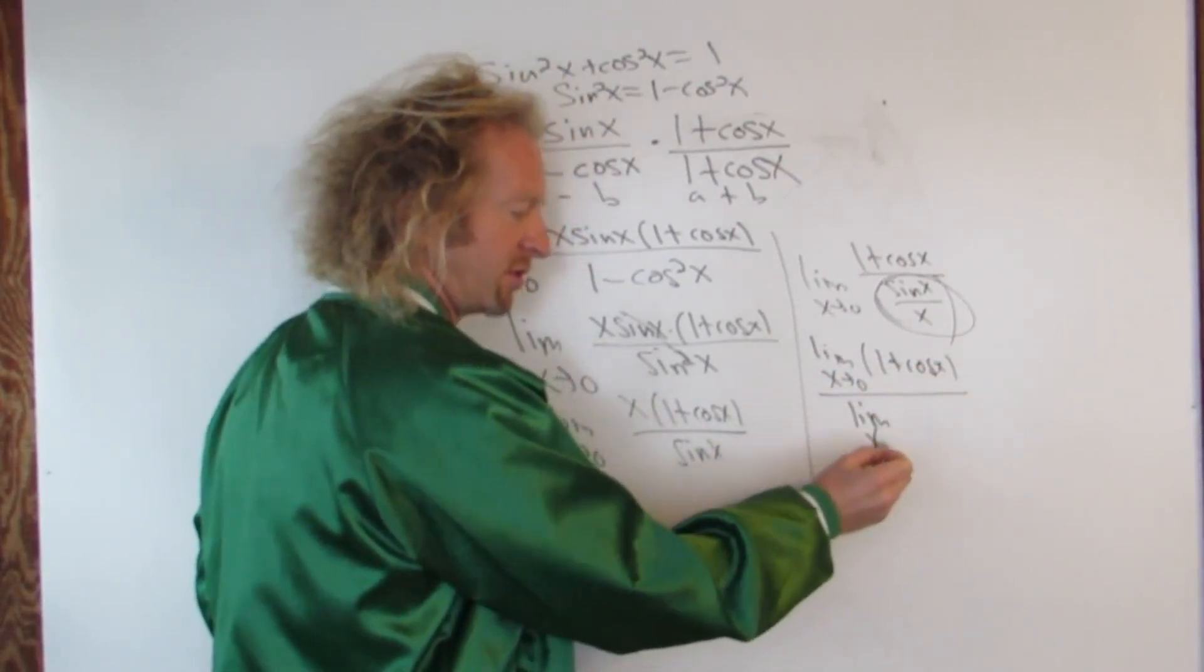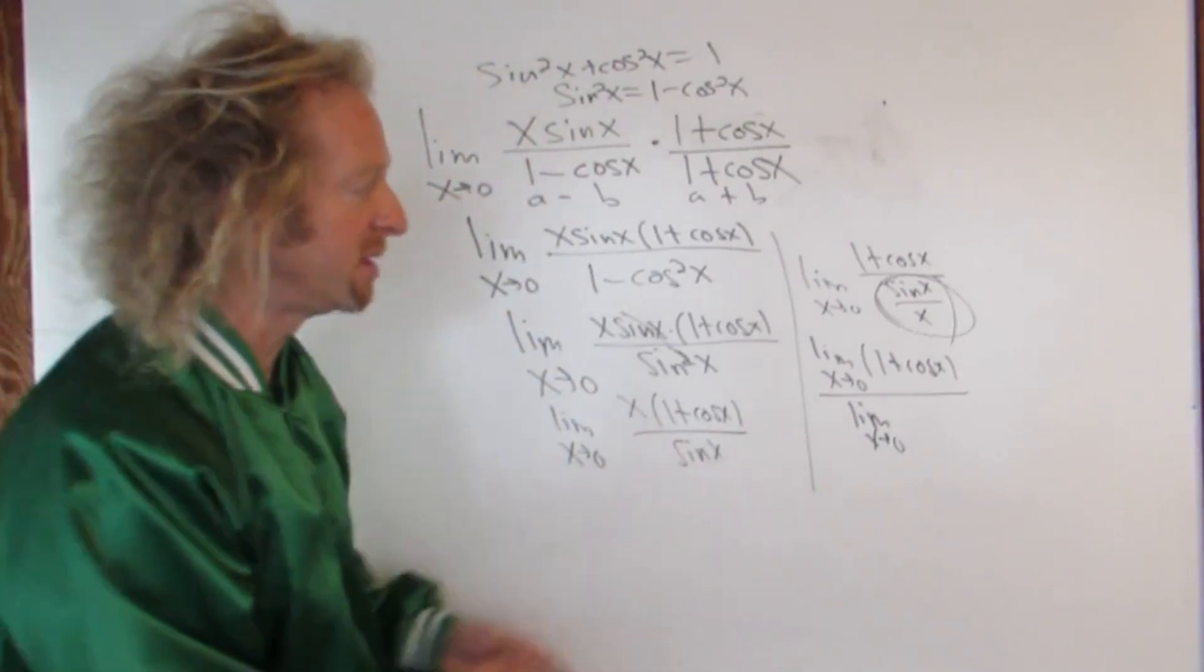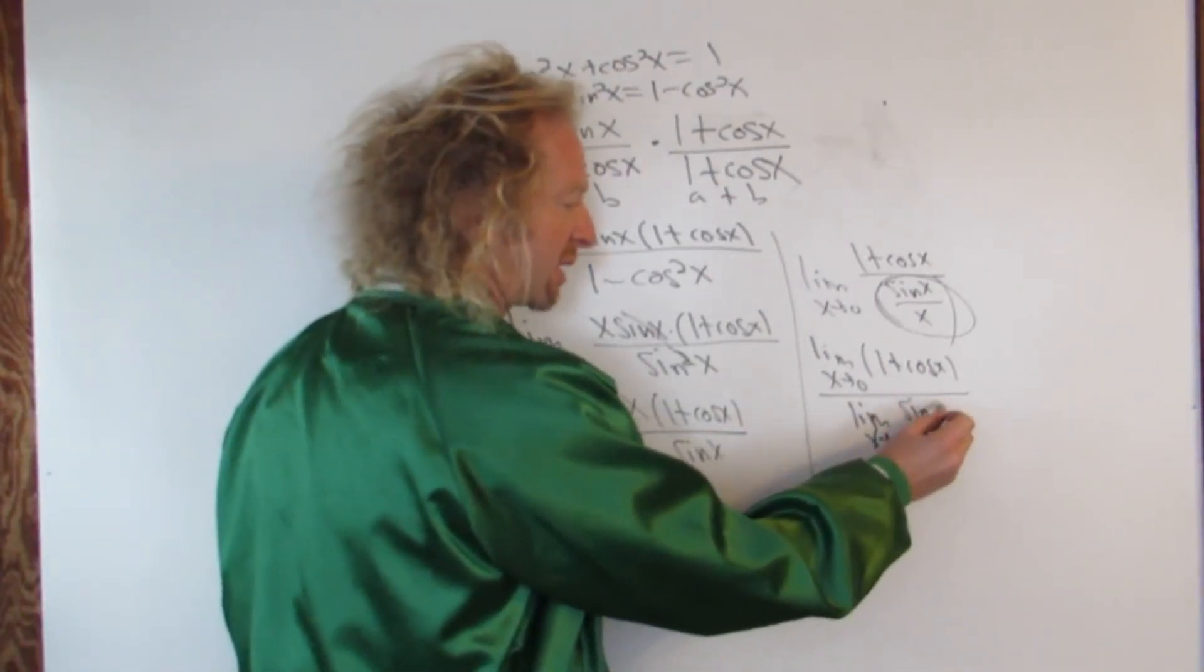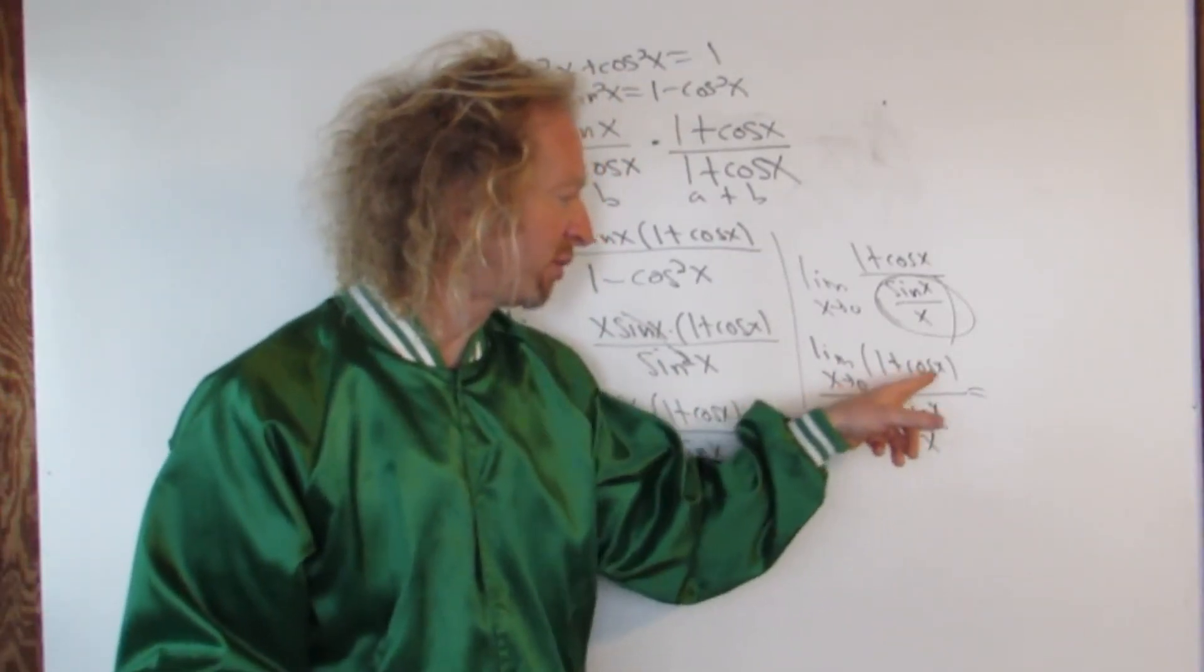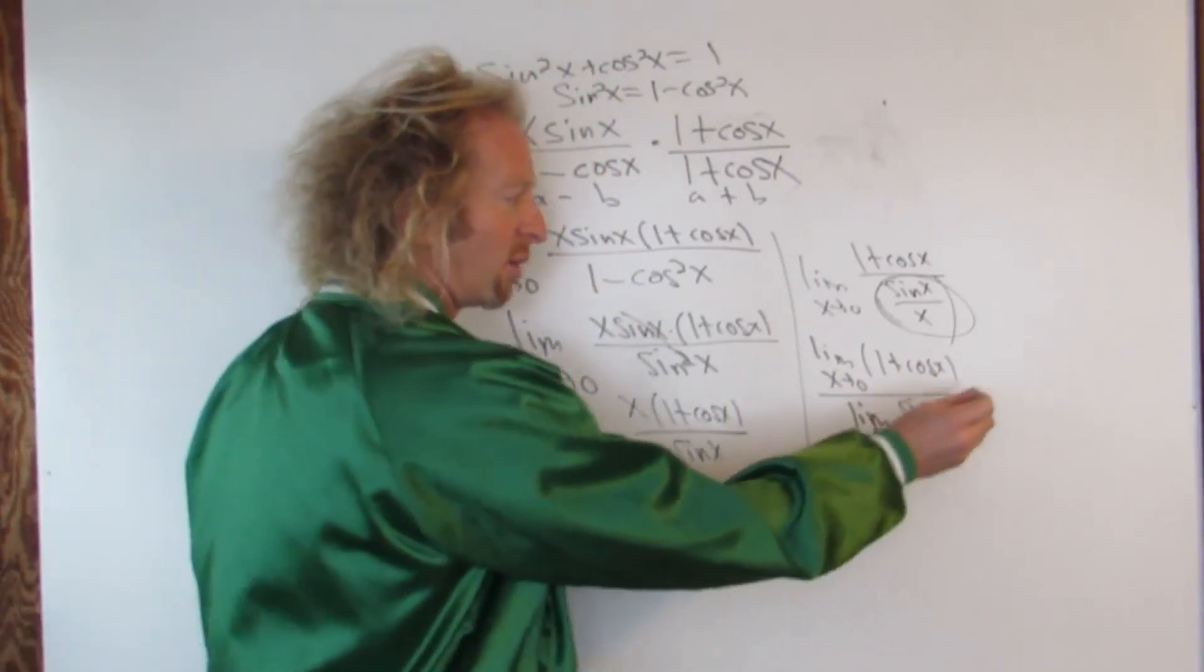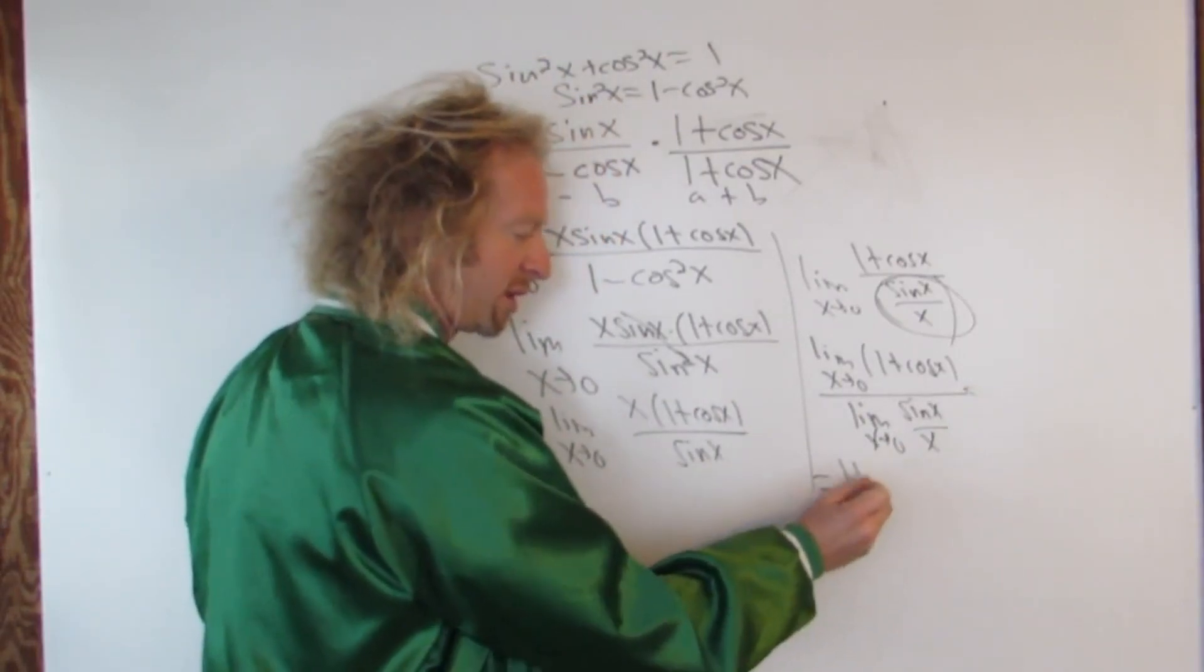Over limit as x approaches zero of the bottom piece. The bottom piece is sine x over x. And then now you just plug in the numbers. You plug in zero here, you get one plus cosine zero. So you get one. I'll write it down here. So you get one plus cosine zero.